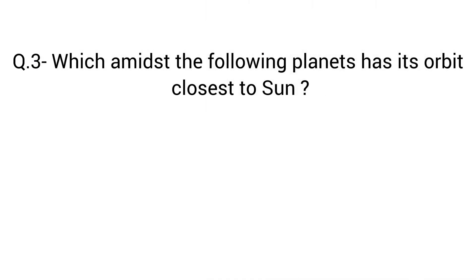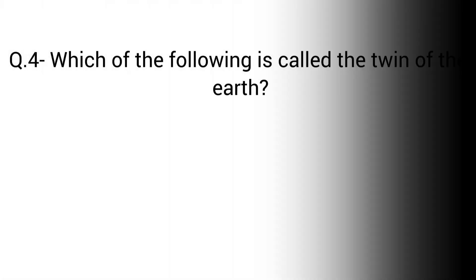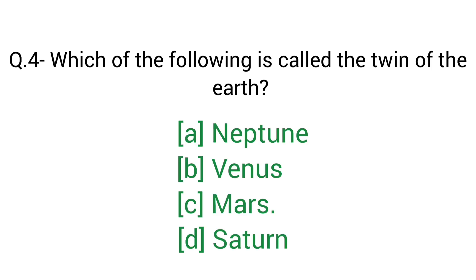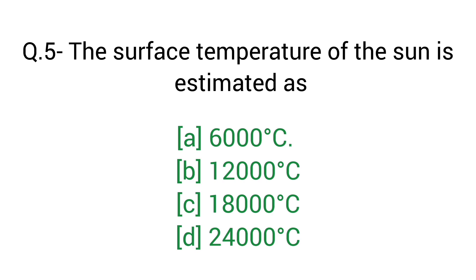Question number 3: Which among the following planets has its orbit closest to the sun? Right answer A — Venus. Question number 4: Which of the following is called the twin of the Earth? Right answer B — Venus. Question number 5: The surface temperature of the sun is estimated as? Right answer A — 6000 degrees Celsius.